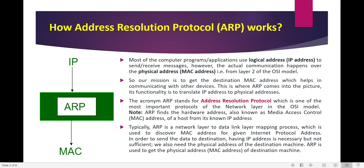In order to send data to a destination, having an IP address is necessary, but it is not sufficient. We would also need to have the physical address of the destination machine. If I want to send data to some other device, only knowing the IP address will not be helpful — I would also need to know the MAC address. All these processes are automated, so we do not need to do anything manually; as part of the network functionality, everything is taken care of.